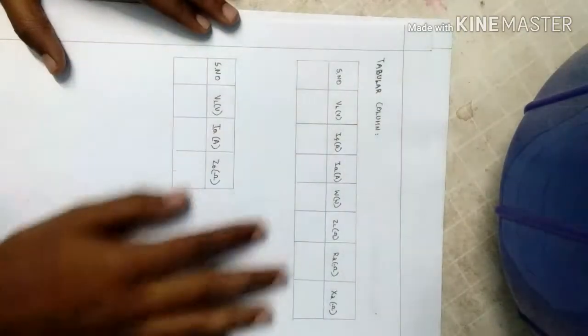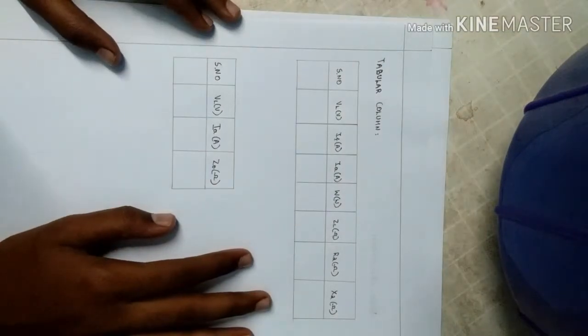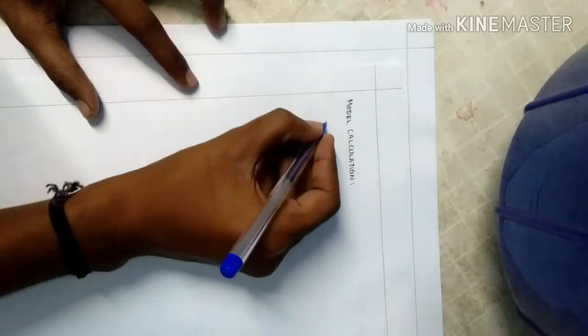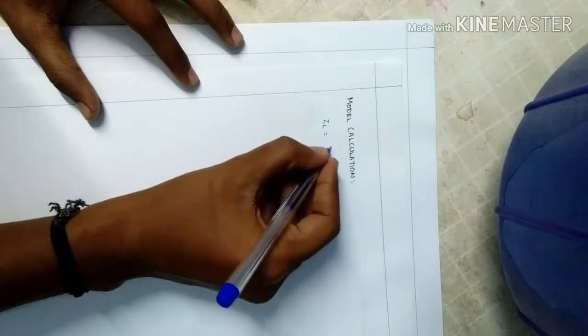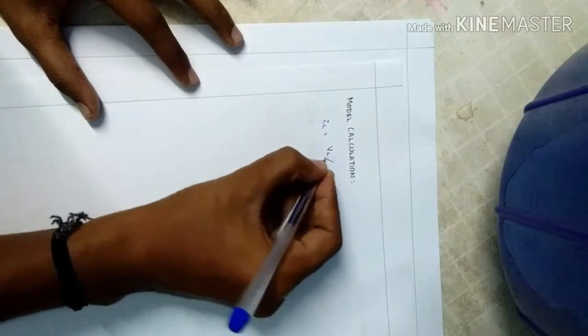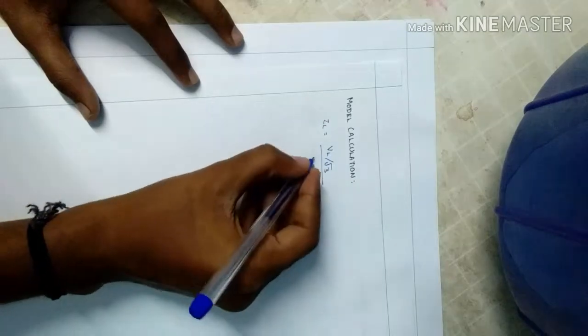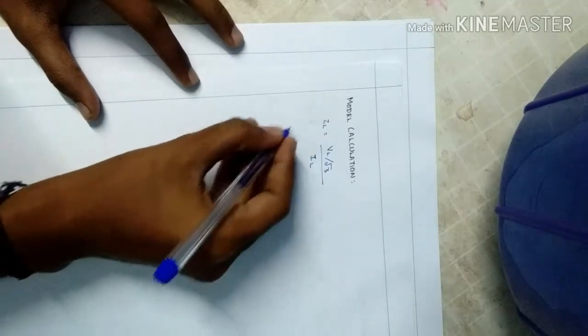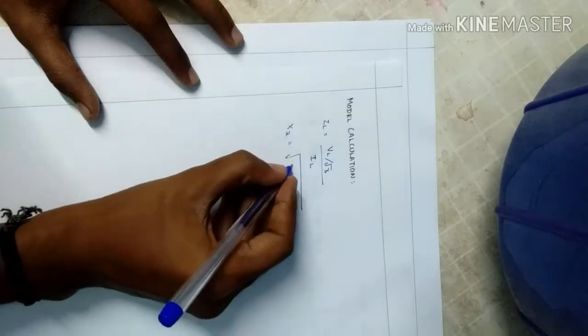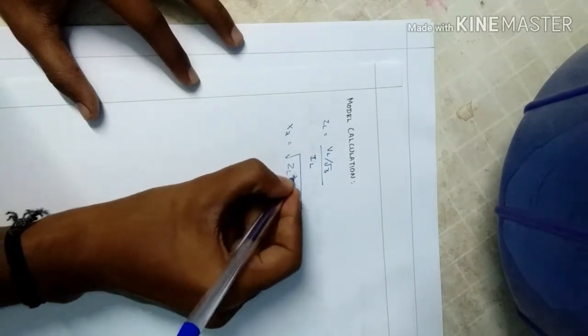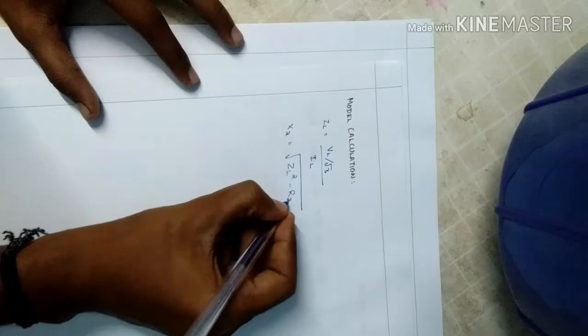This one is a tabulation for this experiment. For the model calculation the formula will be ZL is equal to VL by root 3 by IL, and then X2 is equal to square root of ZL square minus R2 square.